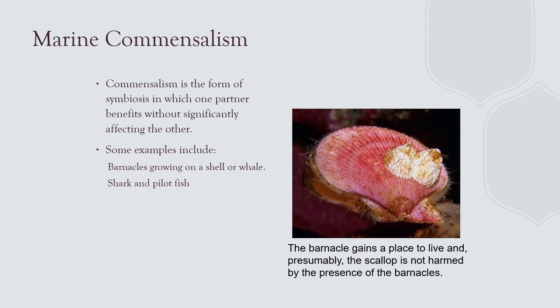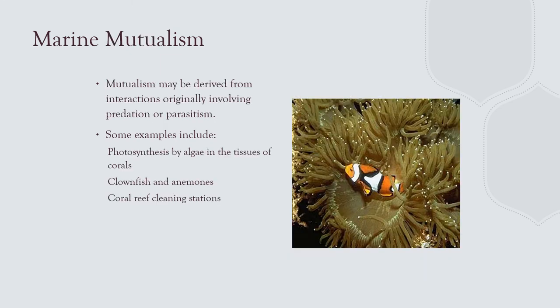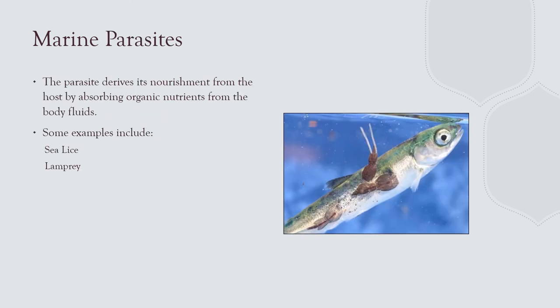In commensalism, one organism benefits and the other is neutral — for example, a barnacle growing on a scallop has a place to live and the scallop is none the wiser. In mutualism, both organisms benefit. In parasitism, the parasite negatively impacts the host — sea lice, which are a type of copepod and arthropod, drain bloody fluid from fish as ectoparasites.